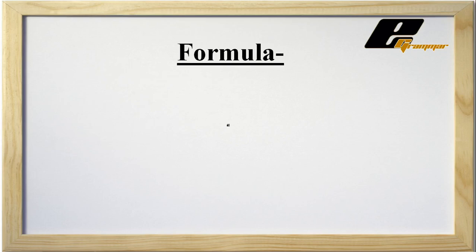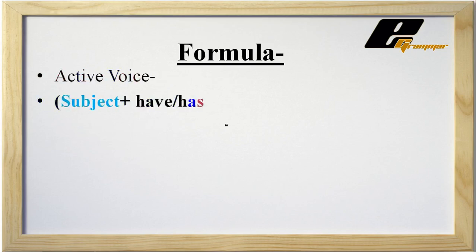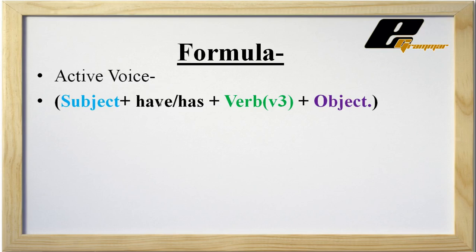Take a look at how we write in active voice of present perfect tense: Subject, then have/has, then the third form of the verb, and then object. Whether we use 'have' or 'has' depends on the subject — this is the form of 'be' used in active voice.